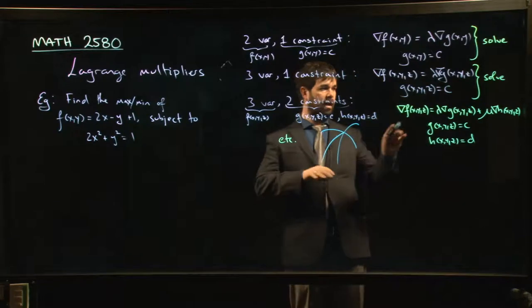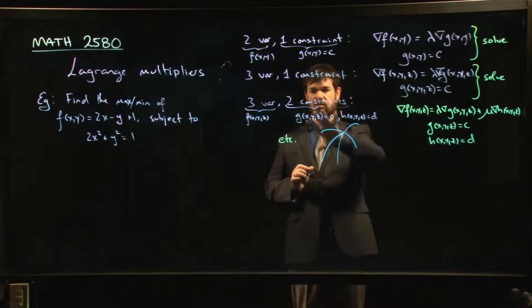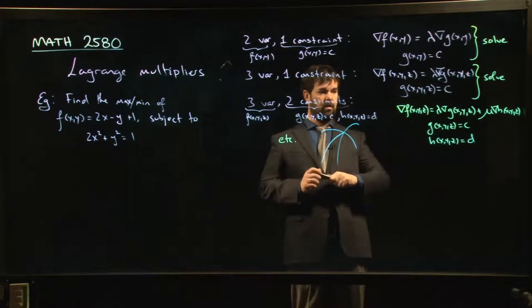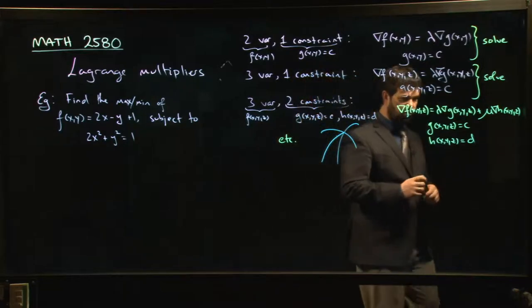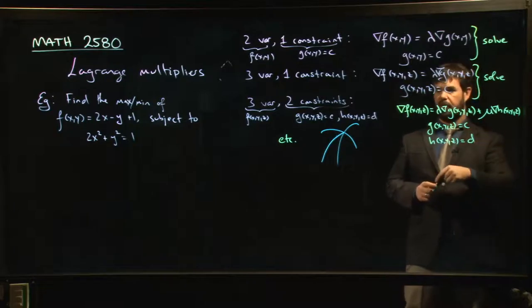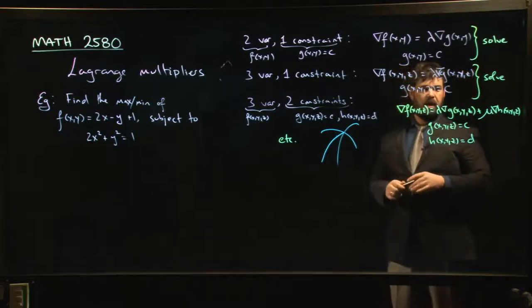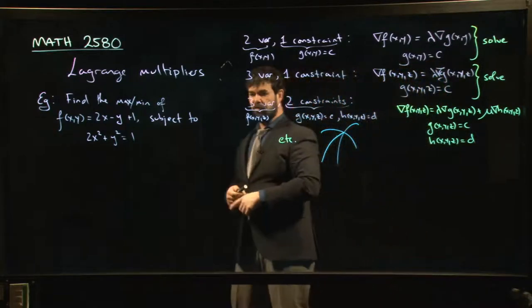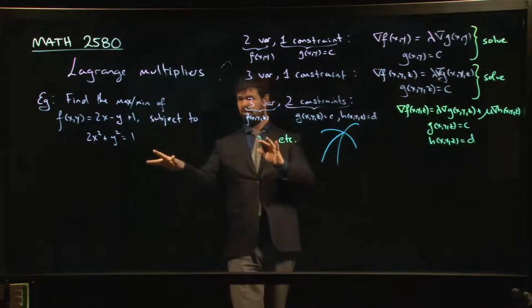And so again, you can kind of play around and you do a little bit of linear algebra and you realize that the condition here for optimizing is going to be that the gradient for f should be a linear combination of the gradients for the two normal vectors, for gradient of g and gradient of h. And you can generalize this. So you can keep going up more variables, more constraints. You can get pretty complicated with this, but we'll start simple.